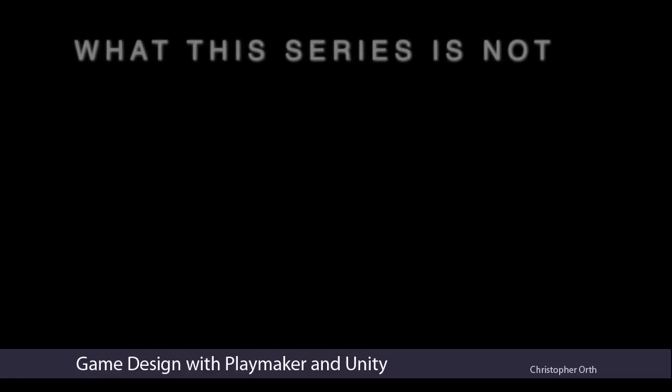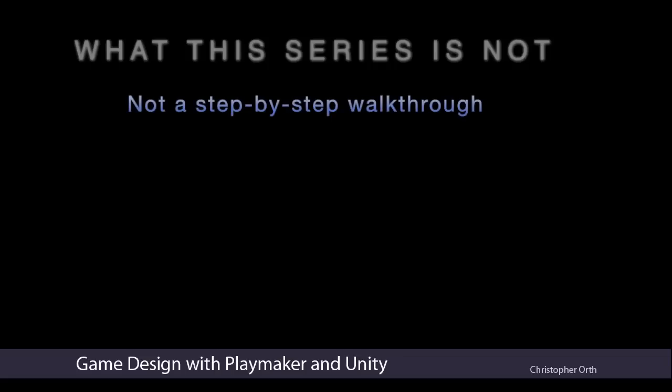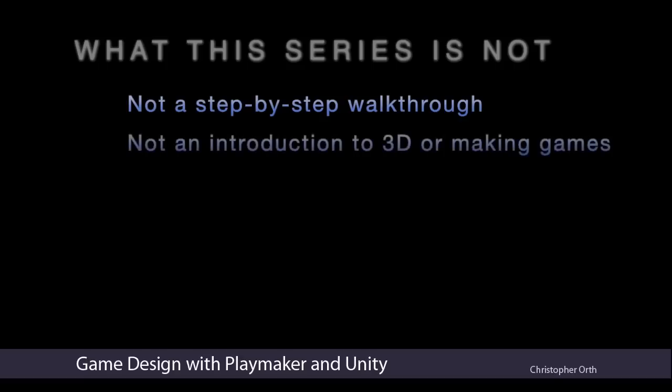While this series is a healthy exploration of Playmaker, it is not a step-by-step walkthrough of every feature. I assume you already have Playmaker installed, and I assume you have at least a basic understanding of how to get around in Unity. This is also not an introduction to 3D and making games. I assume you understand concepts like parenting objects, transforms, materials, stuff like that. You don't need to be an expert at these by any means to get a lot of value from these tutorials, but having a working knowledge of the basics will be very helpful.